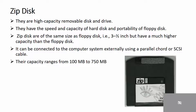Zip disk. These are high-capacity removable disks. They have the speed and capacity of a hard disk combined with the portability of a floppy disk. Zip disks are the same size as floppy disks, that is 3.5 inch, but have a much higher capacity. The capacity ranges from 100 MB to 750 MB.